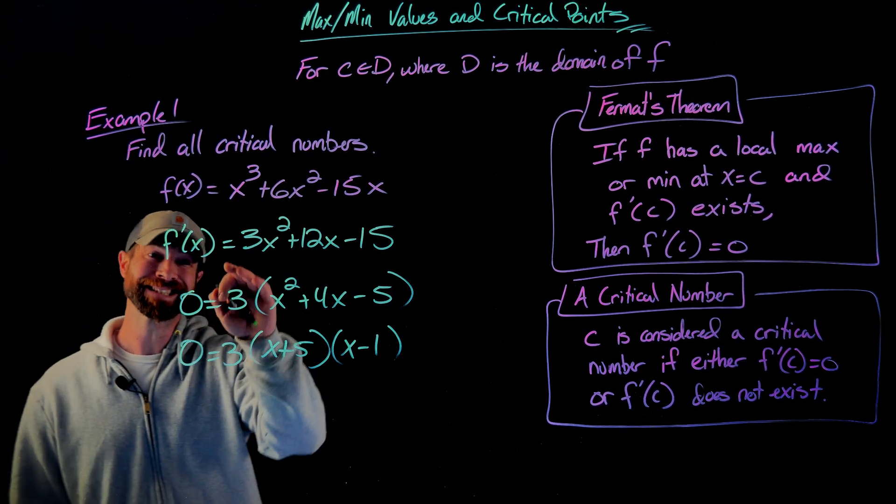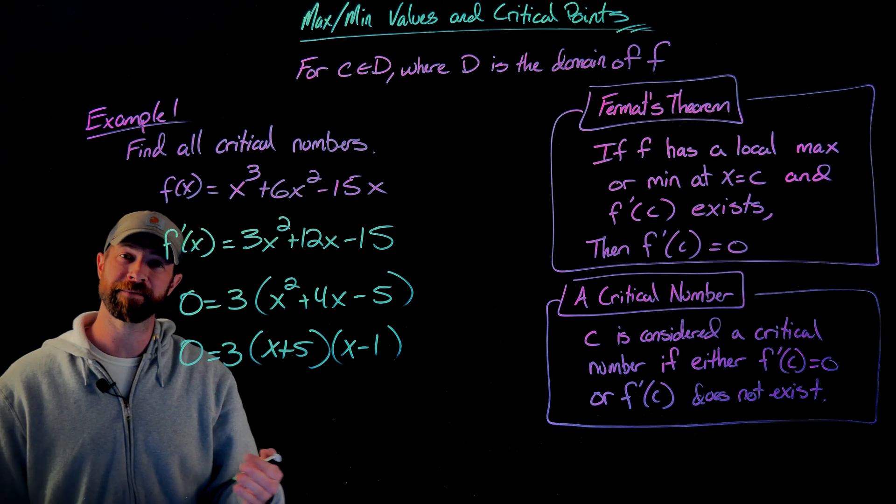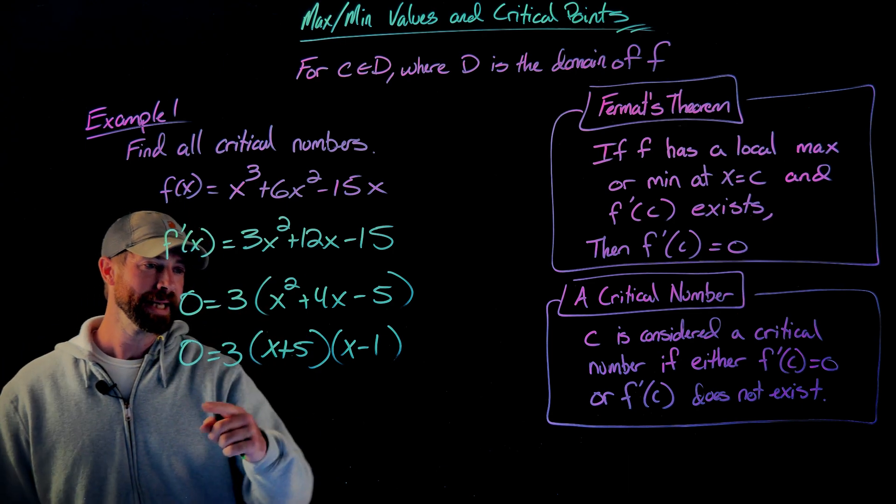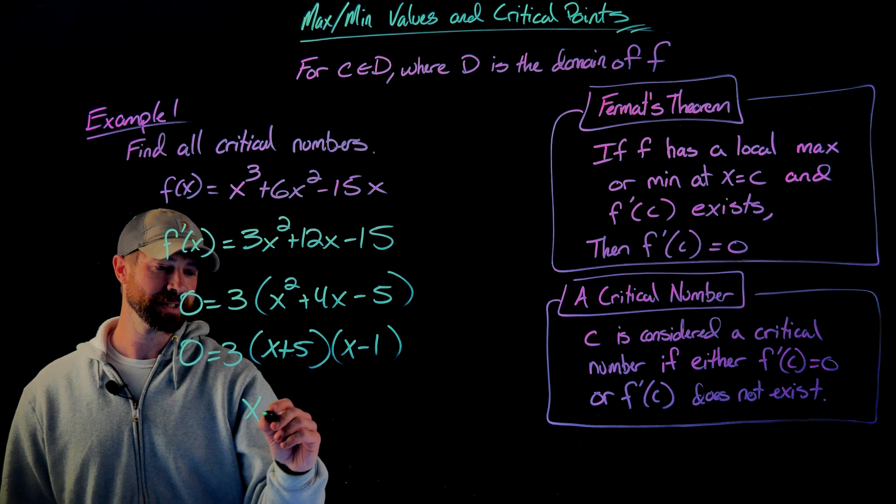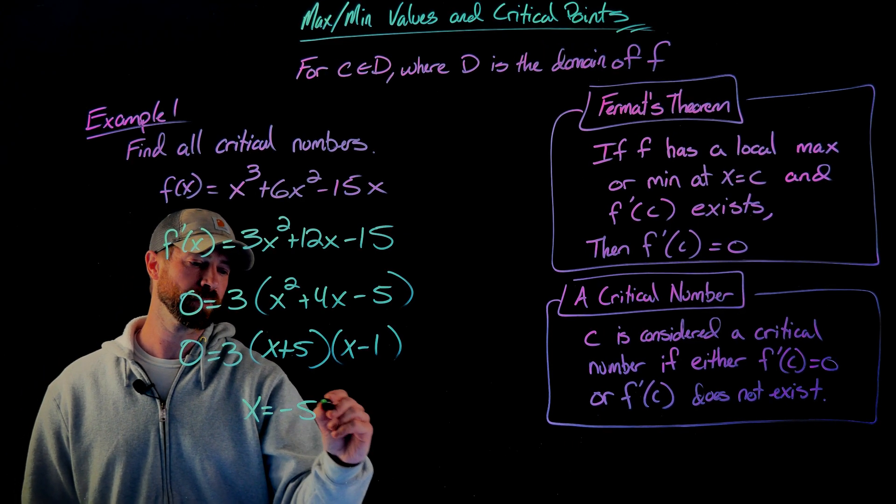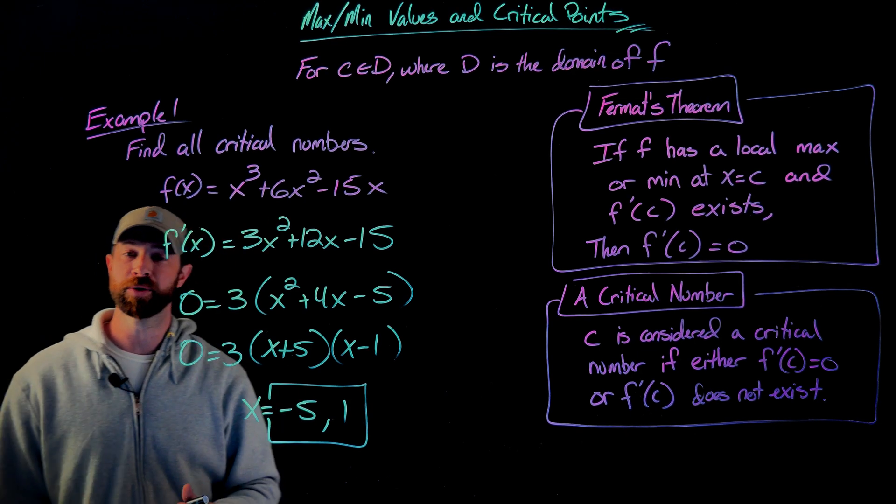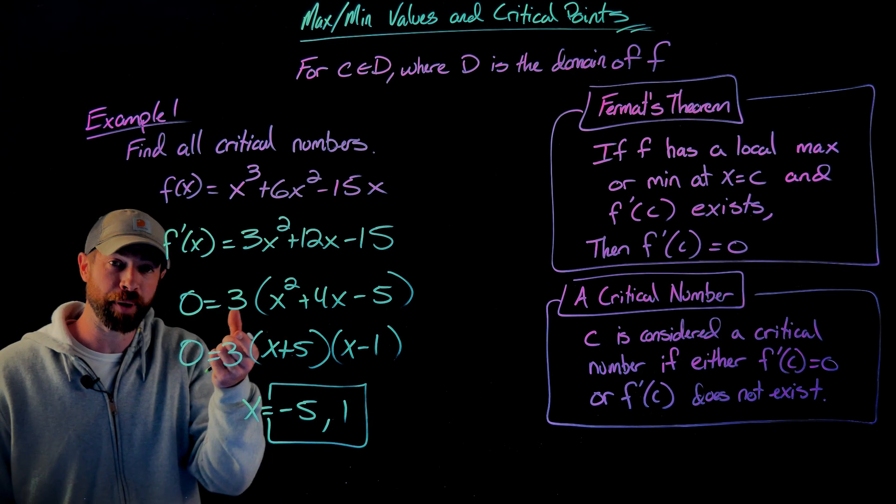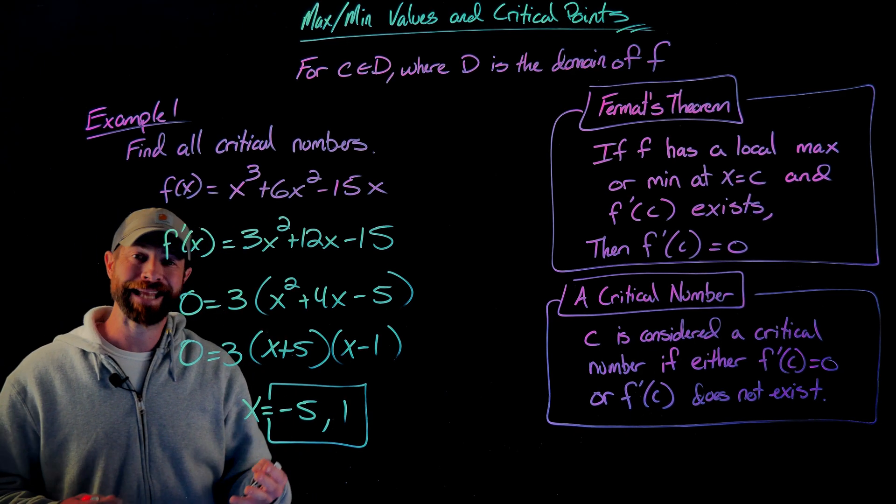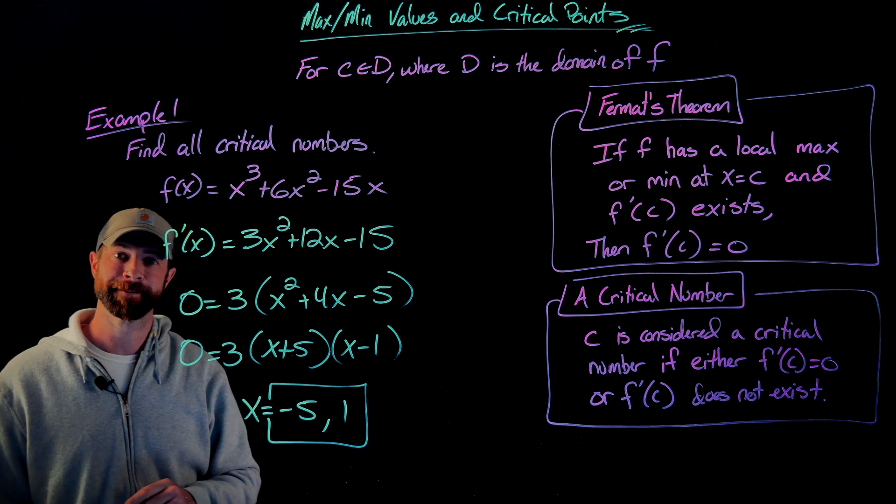Again, I've set this derivative equal to 0 because I'm trying to find out when the derivative is equal to 0. In this case, I'll get using the zero factor property at x equals negative 5 and x equals 1. Those are my only two critical numbers because this as a polynomial, it does not have any x values for which it does not exist.